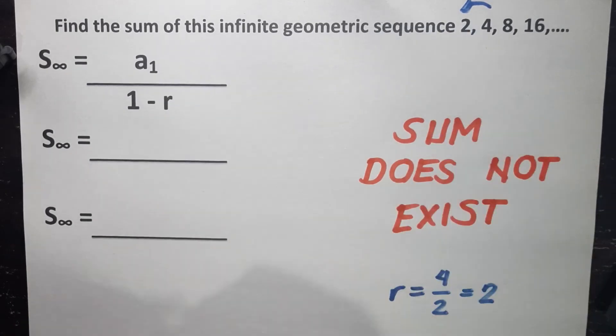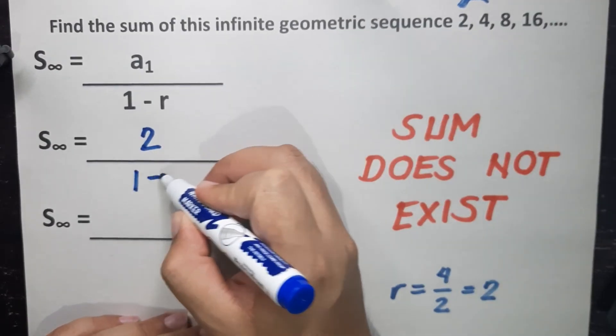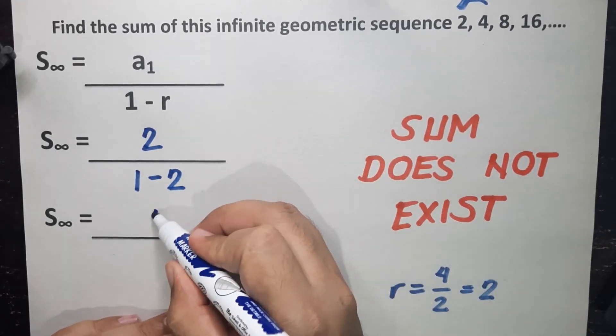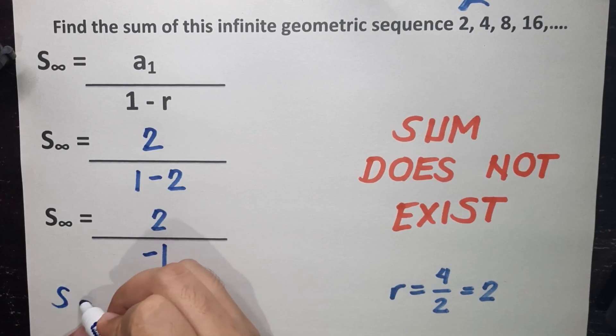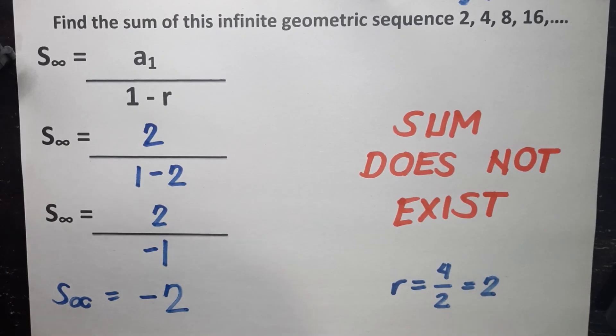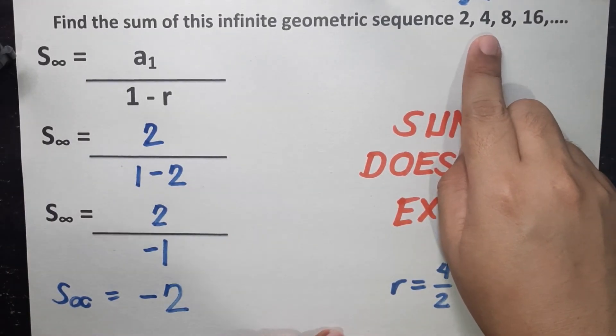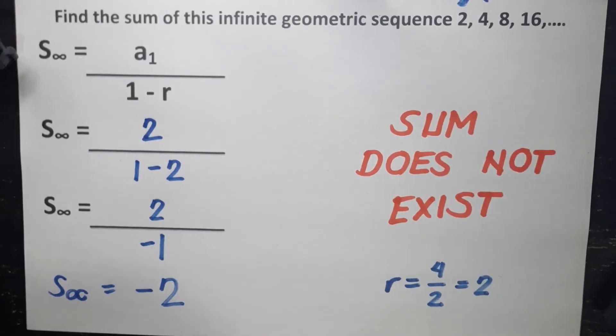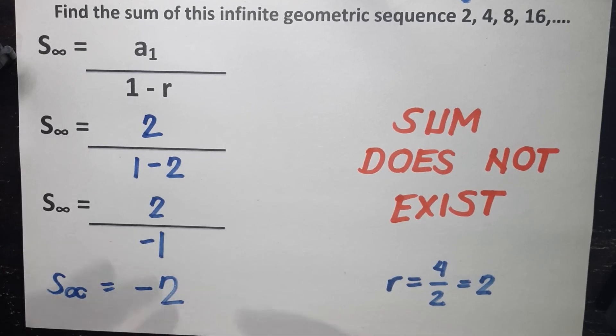Our common ratio is 2. a₁ is 2. Common ratio is 1 minus 2. So this will become 2 divided by negative 1. So our sum to infinity is negative 2. Obviously, this is a wrong answer because again, this is the sum. 2 plus 4 is 6 plus 8, 14 plus 16, 30. And so on. That will not give you an answer of negative 2. Which is why there's really no need to solve anymore once your common ratio is outside the given condition.